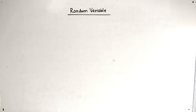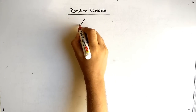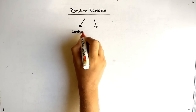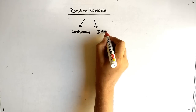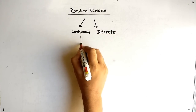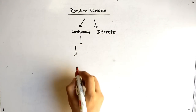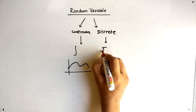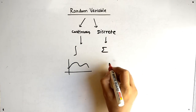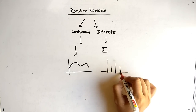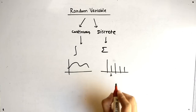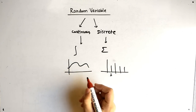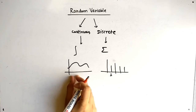Hello friends, today our topic is random variable. There are two types of random variables: first is continuous and second is discrete. Continuous is solved using integrals and represented as a continuous graph, whereas discrete deals with summation and is represented as lines, because at a particular value we have a discrete value.